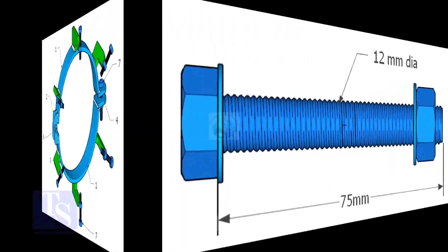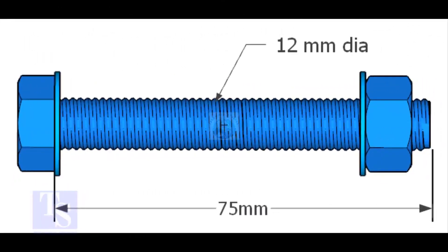Item number six is nut and bolt with two washers, half-inch diameter, and three inches long. The quantity is one number.